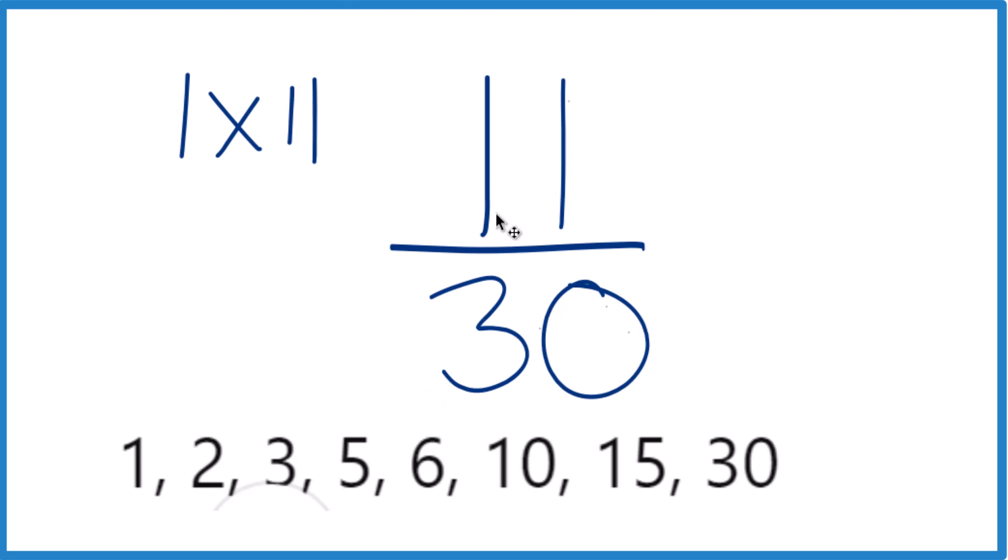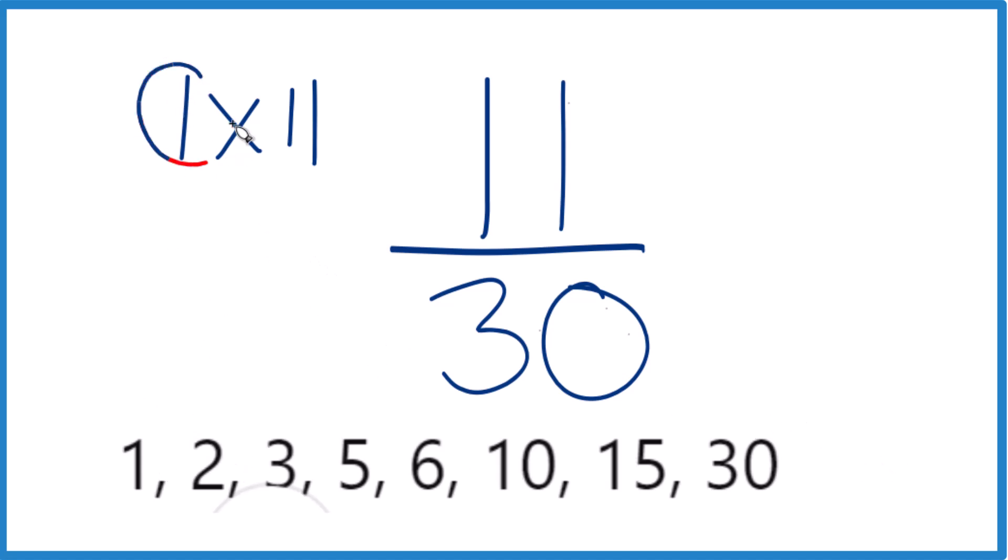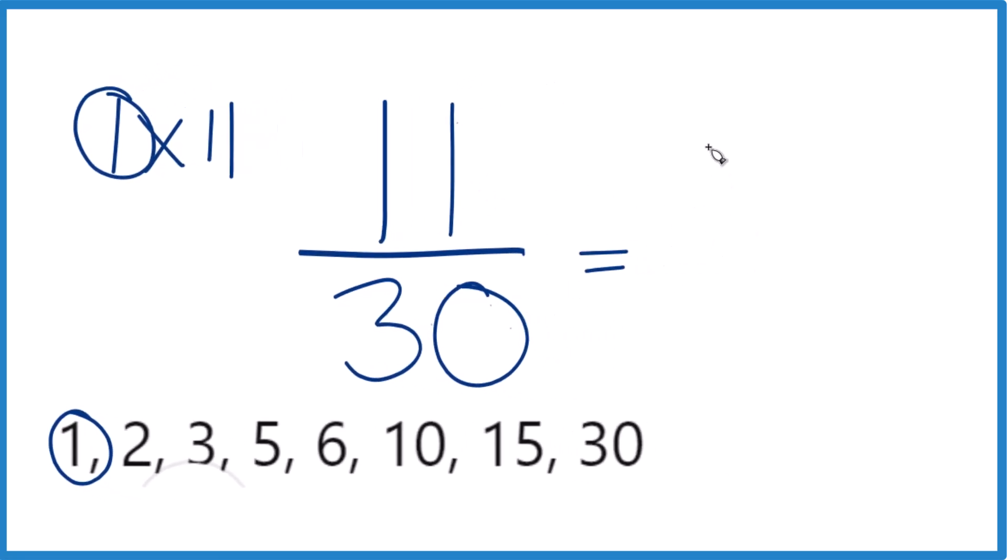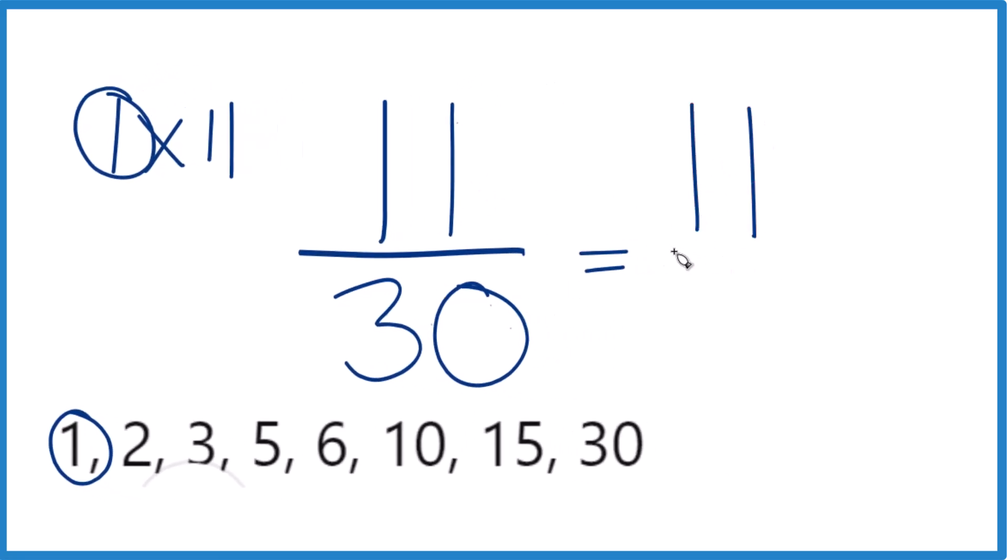So let's find the common factor for 11 and 30. Looks like 11, that's not there, so only 1 is the greatest common factor. So we divide 11 by 1, we get 11, and then we divide 30 by 1, we get 30. And that's right where we started.